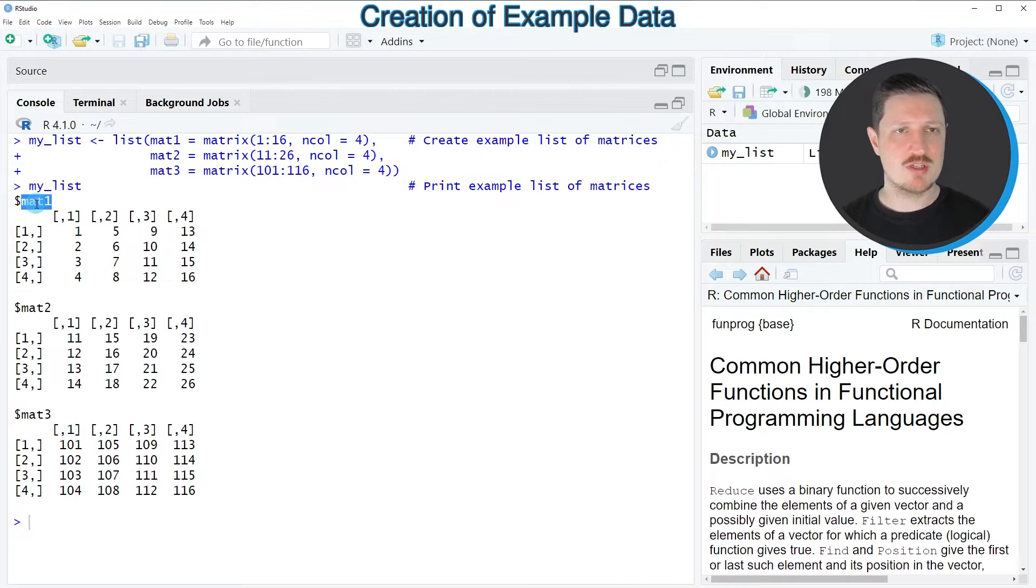The first list element is called mat1, the second is called mat2, and the third is called mat3. As you can see, each of these matrices contains four rows and four columns, and all contain numeric values.